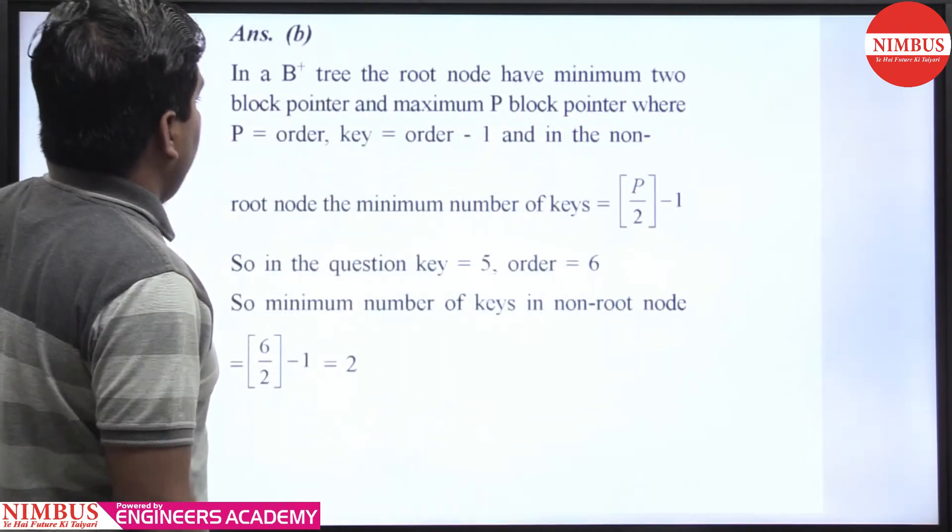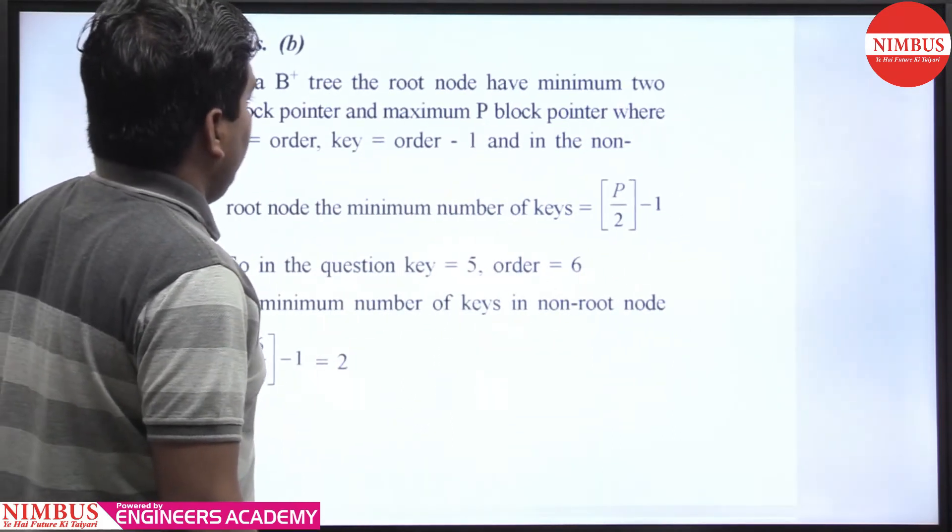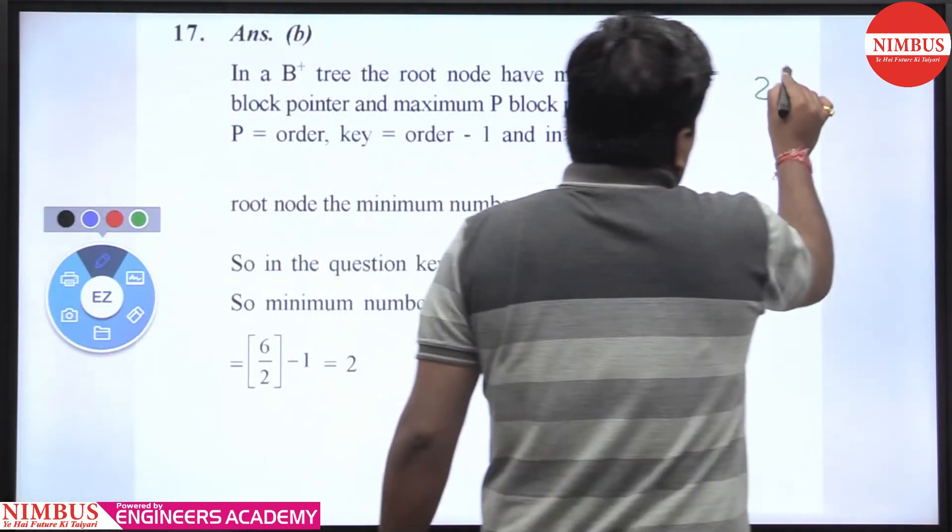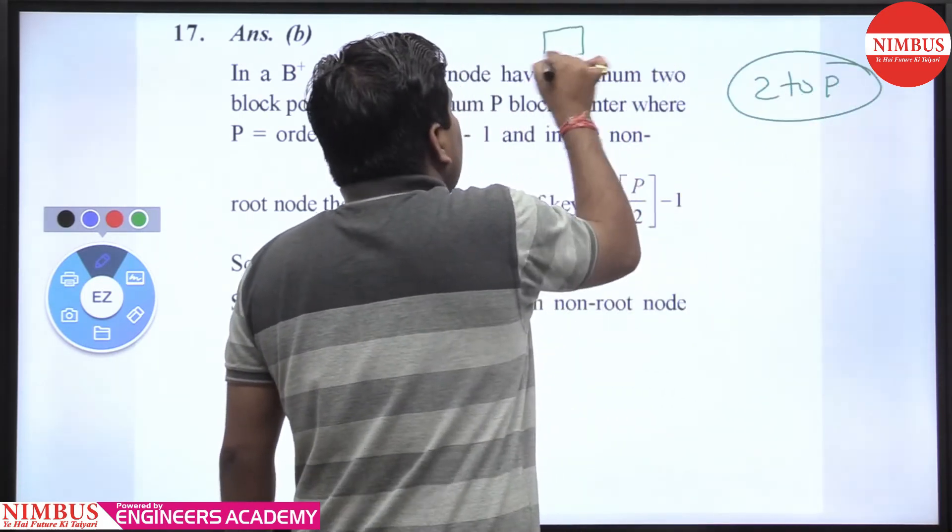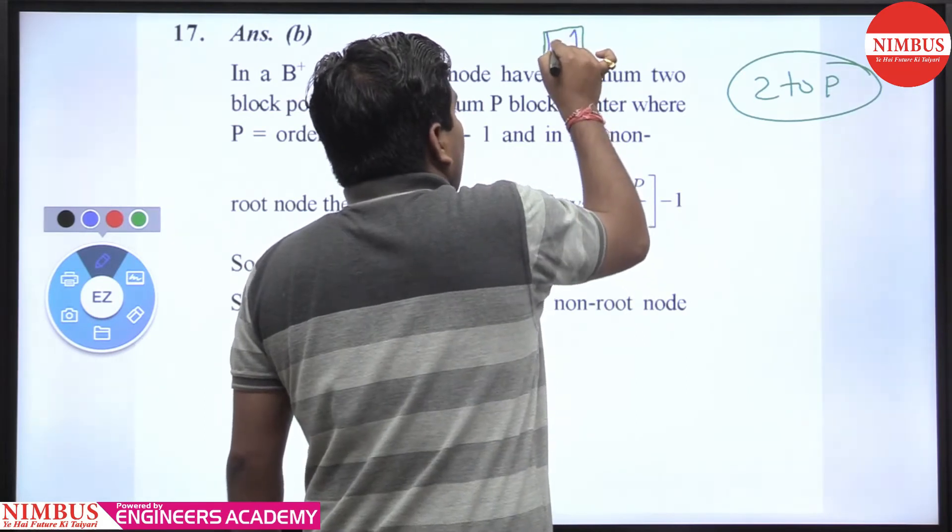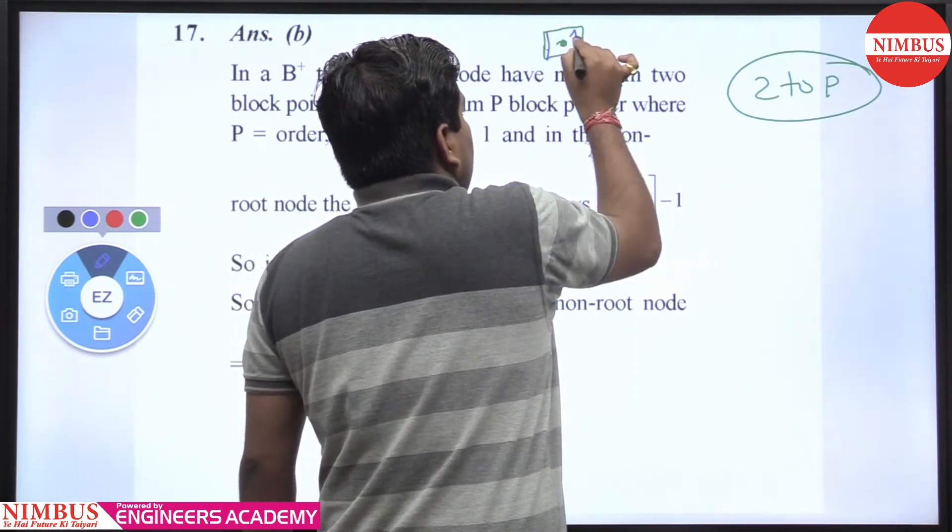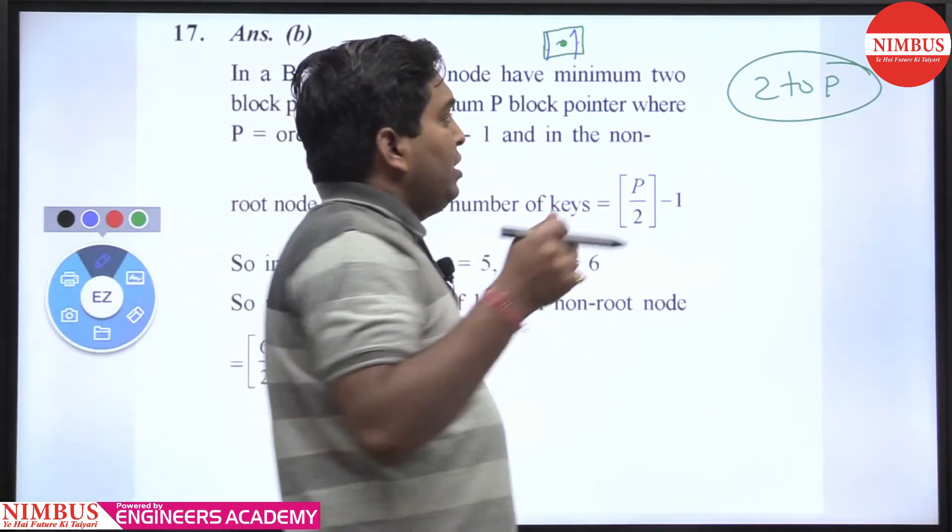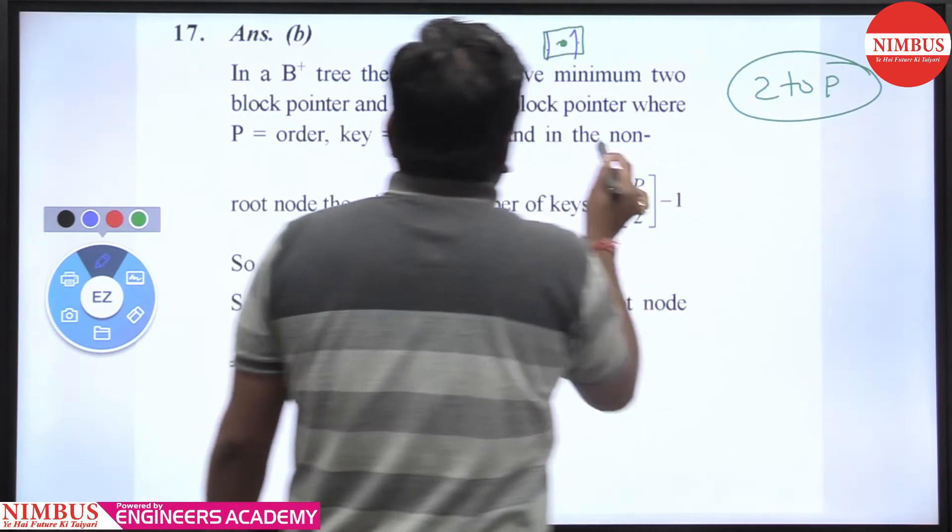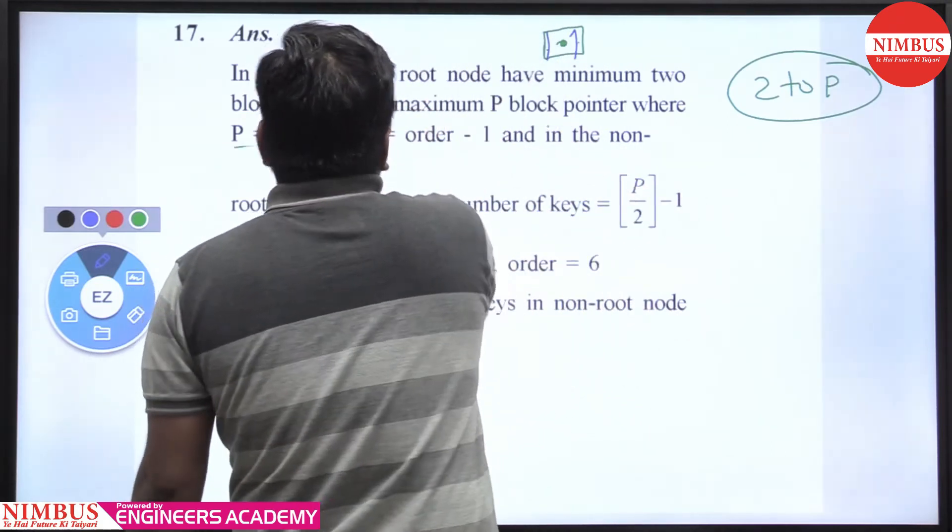In a B+ tree, the root node can have a minimum of 2 block pointers and a maximum of p block pointers. This means the root can have at least 1 key, which gives 2 block pointers, and a maximum of p-1 keys, which gives p block pointers, where p is the order.